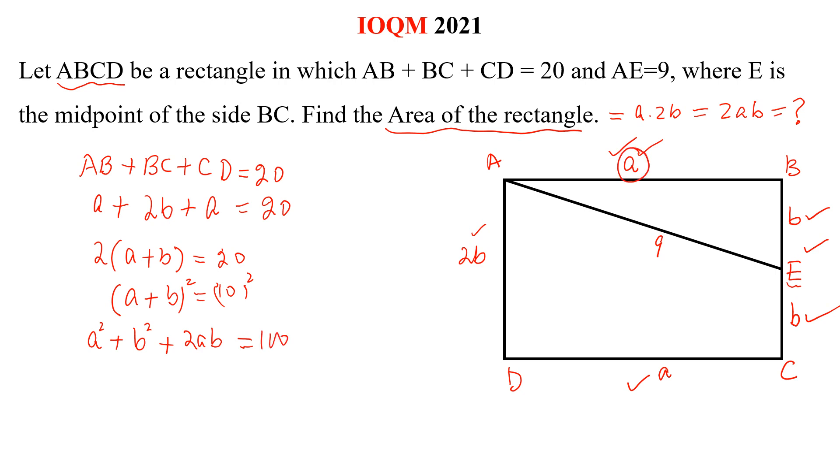From here, A square plus B square is equal to 9 square.